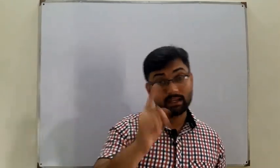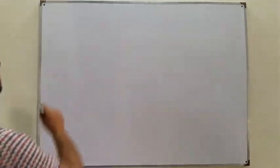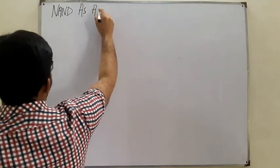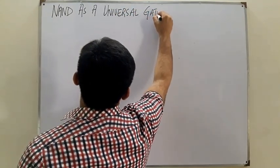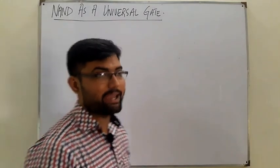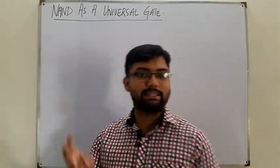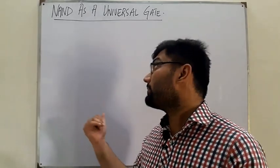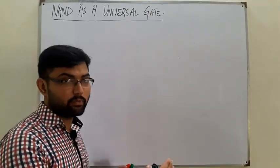Today we discuss in detail about the NAND gate and why it is called a universal gate. It is called a universal gate because we can make any other gate from this NAND gate, which means we can get any required operation from it. The basic gates are the AND, OR, and NOT. Today we see how to make those gates from the NAND gate.